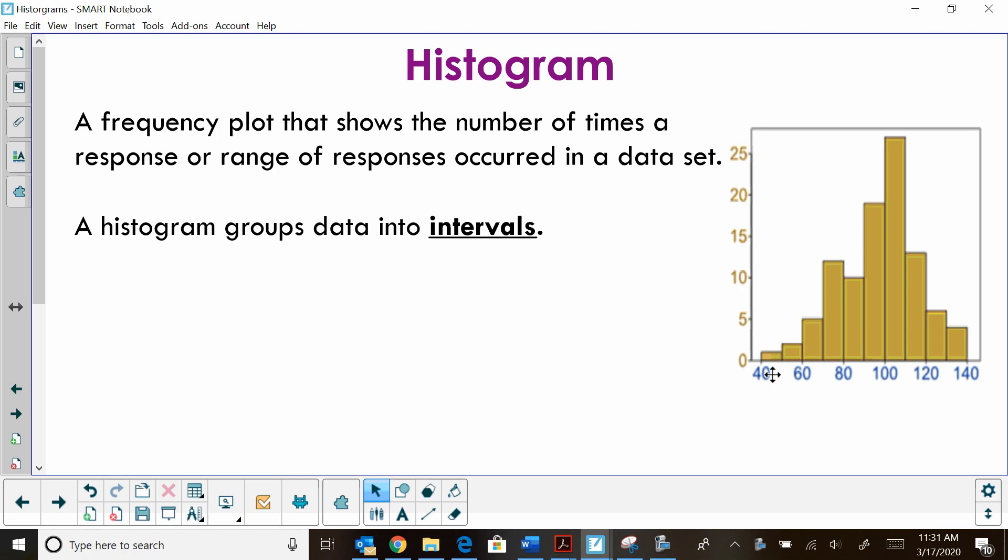So looking at this histogram, we've got intervals from 40 to 50, 50 to 60, 60 to 70, 70 to 80. All these are by 10s all the way up to 140. On the y-axis, I have intervals marked in fives: 5, 10, 15, 20, 25.